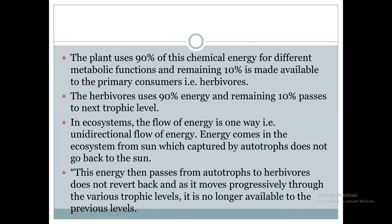Energy will be transmitted to another system, but it will not go back to the sun. This energy passes from autotrophs to herbivores and does not revert back; it moves progressively through various trophic levels. Energy is transmitted from one organism to another organism.